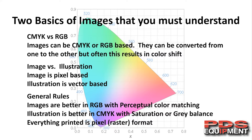A couple of general rules: images are best in RGB with perceptual color matching. It's a general rule — there are exceptions to every rule in the world of color, so get used to it. Illustration is better in CMYK with saturation or gray balance. Everything printed is pixel, raster, or dot based. So everything created in the illustration world, when we print it, is going to be converted to the pixel or image world, because you can only print dots, raster, or pixels — all the same thing.